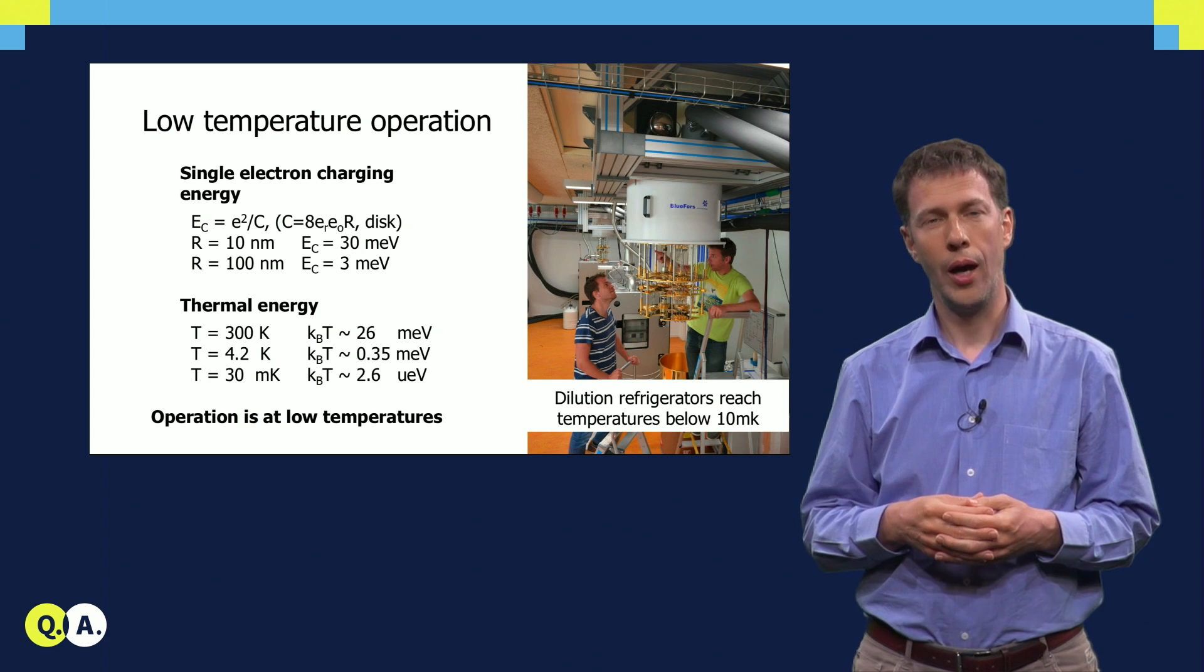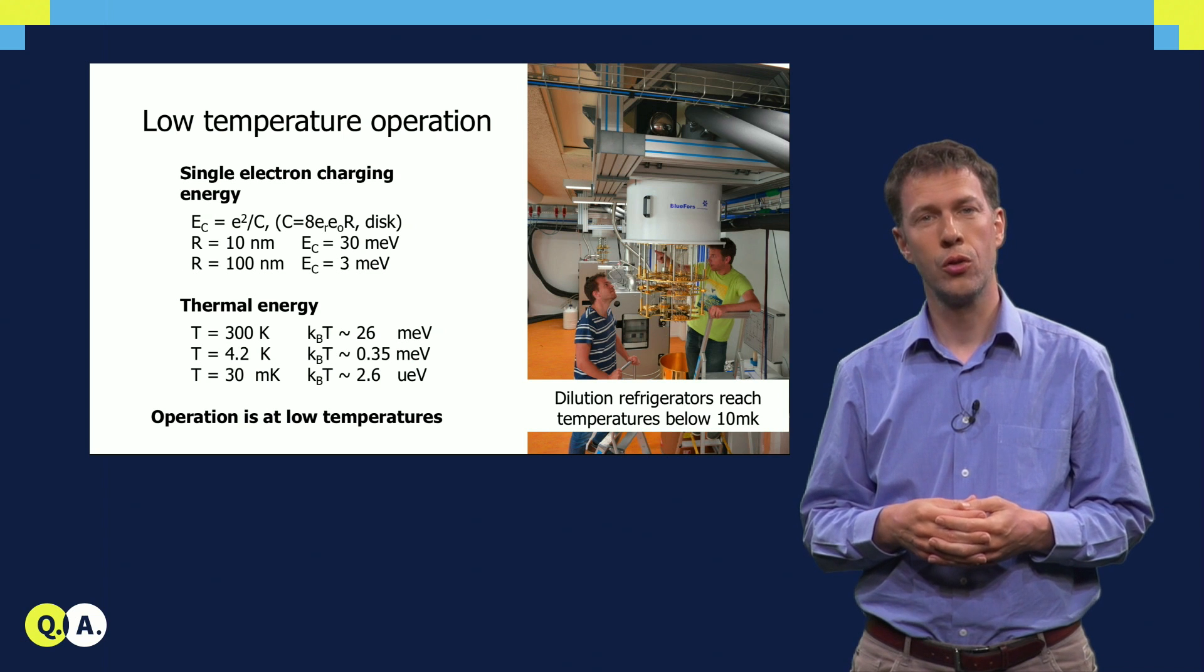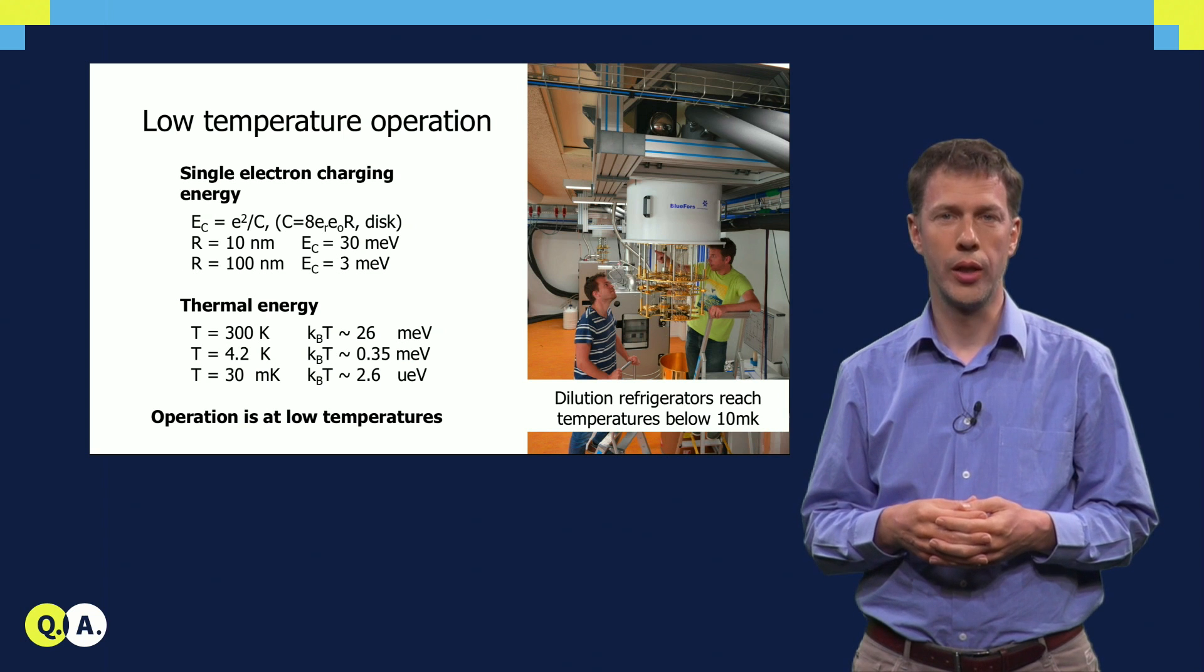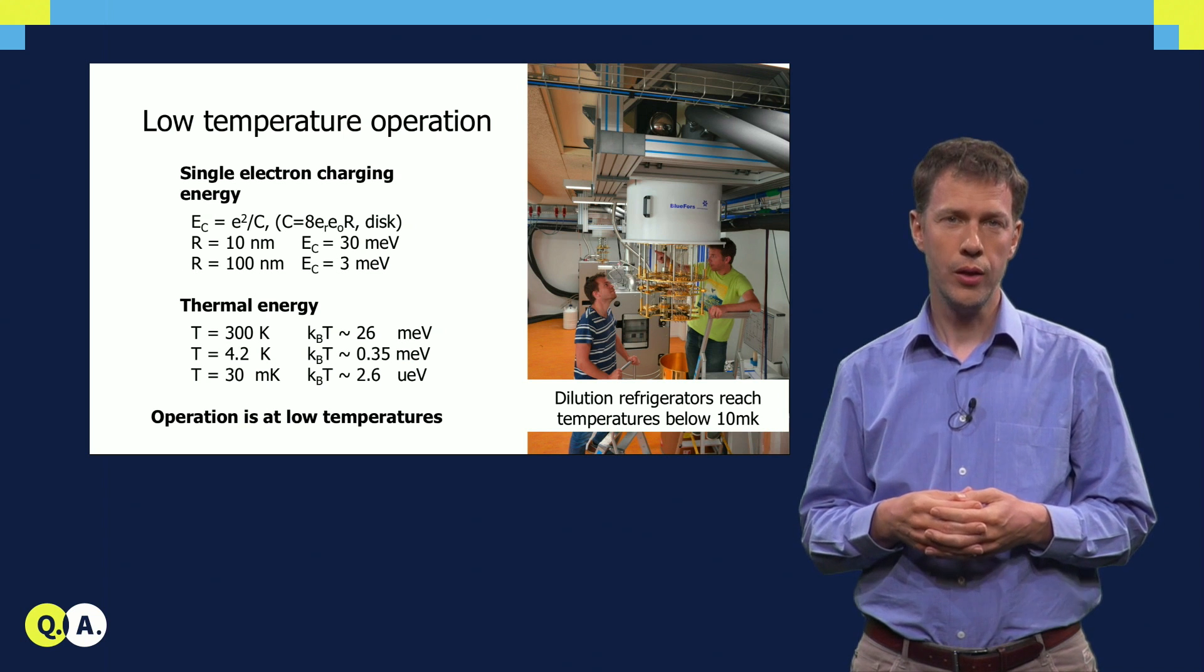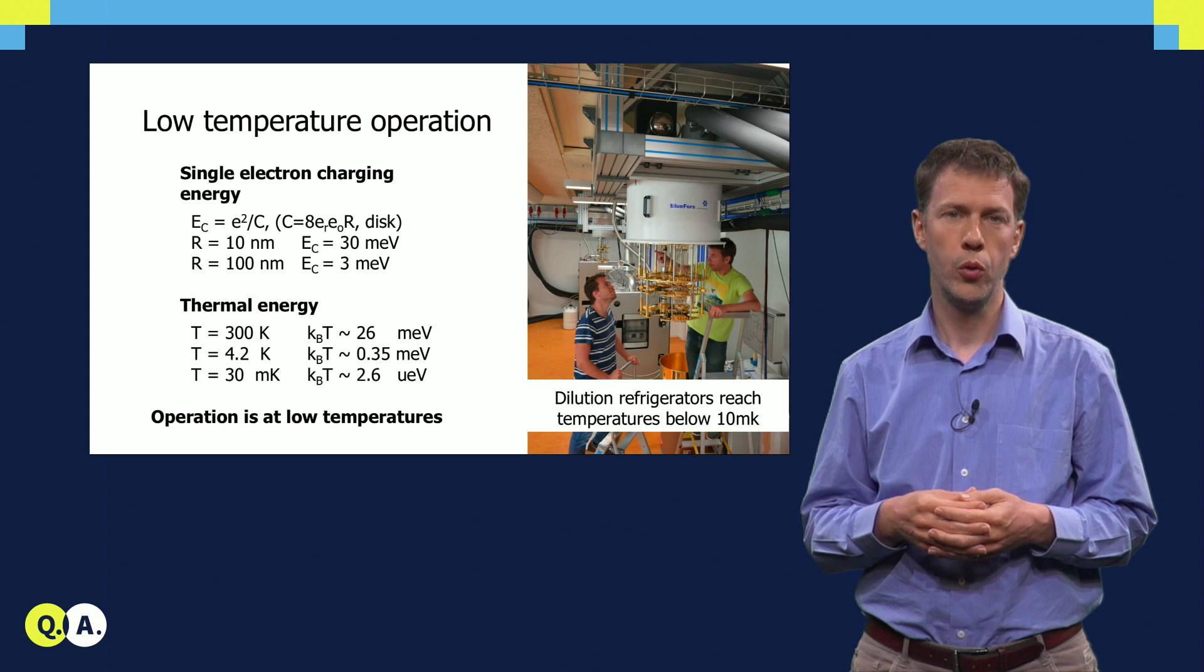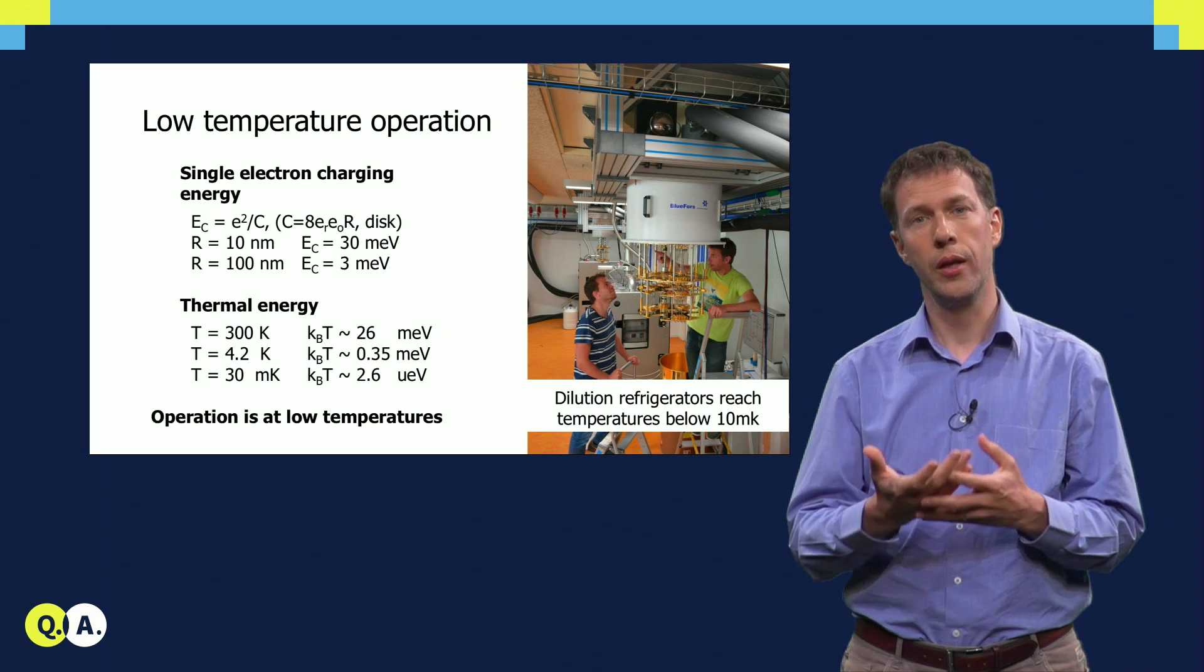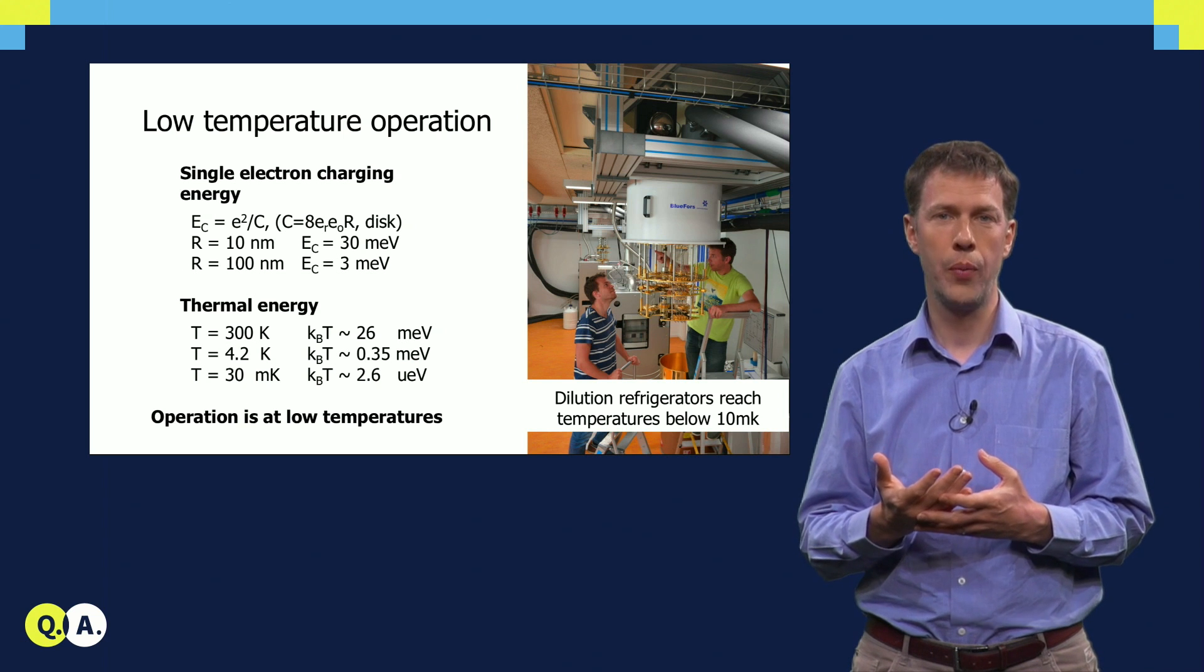So how in the world can we isolate individual electrons and control them? It starts with the notion of the charging energy. That is the energy that results from the Coulomb repulsion between electrons, and as we add charges to the island, this costs energy.